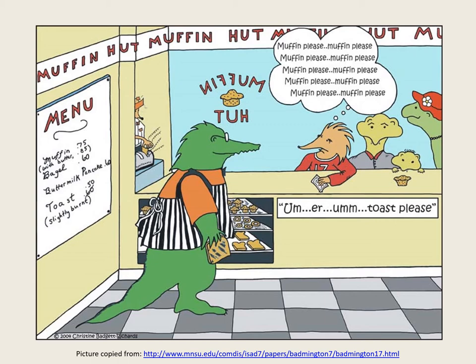If, on the other hand, we don't really care how clearly and accurately we speak a word, the release threshold for that word will be set at a lower level. In the cartoon, the hedgehog really wants to ask for a muffin and is worried he might not say the word 'muffin' well enough for the crocodile to understand him. His strong desire to say 'muffin' as clearly as possible means the release threshold for it has become set too high, so his brain has difficulty releasing it for motor execution. Ironically, 'toast' can be released more easily because he doesn't care about it as much.